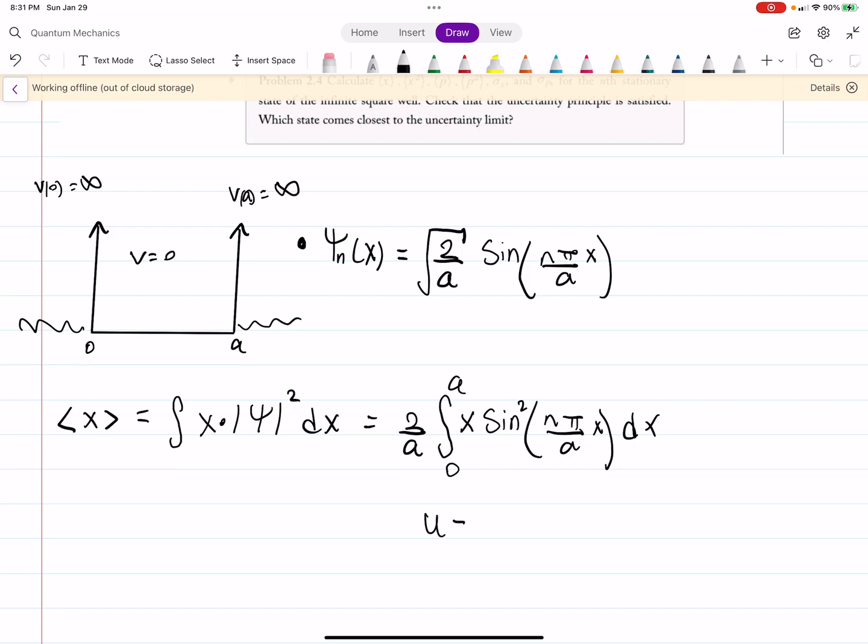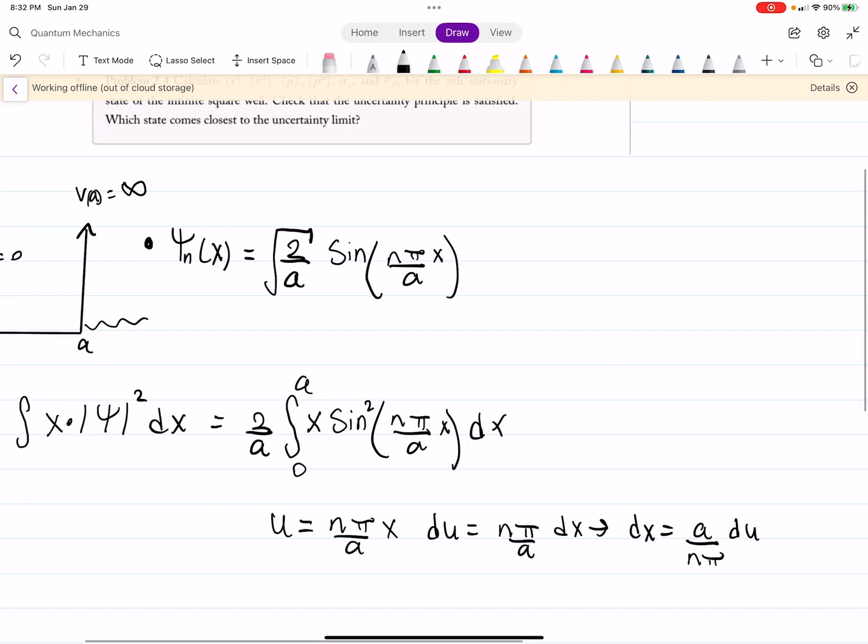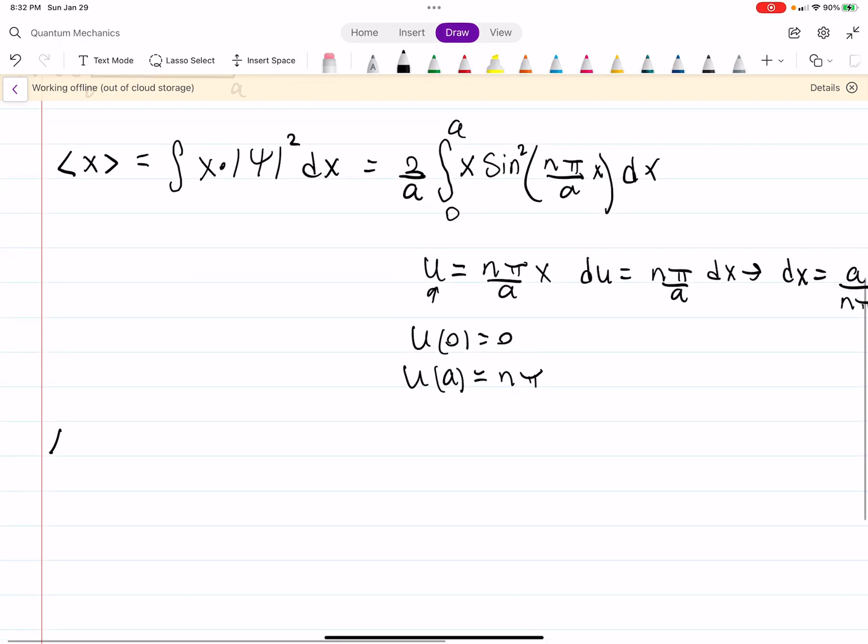You could do a u substitution here. This actually is not too bad of an integral. And then from here, you can see that dx is a over n pi du. We can also see u of 0 is 0, and u of a is just going to be n pi if you plug in 0 and a there. So, this is actually kind of not that bad of an integral compared to a lot of integrals you see in this course.